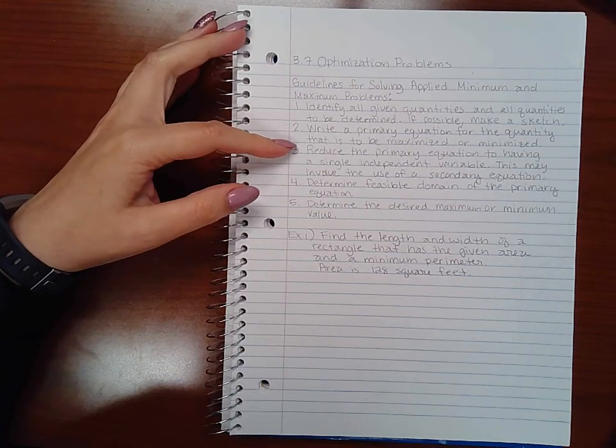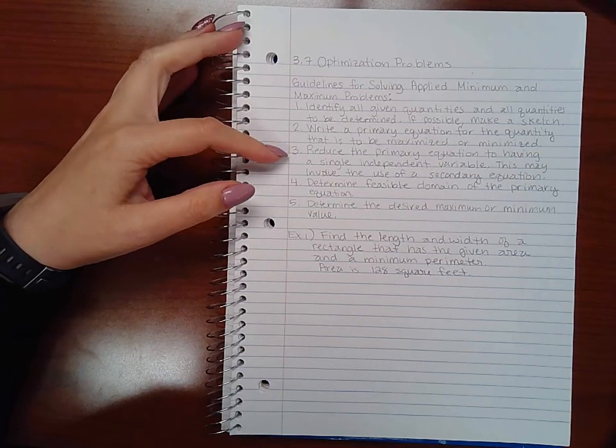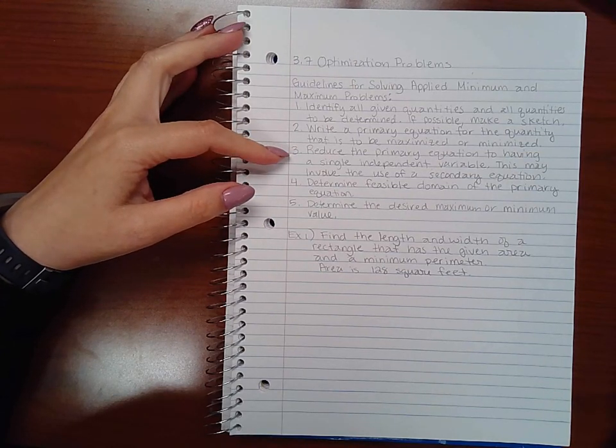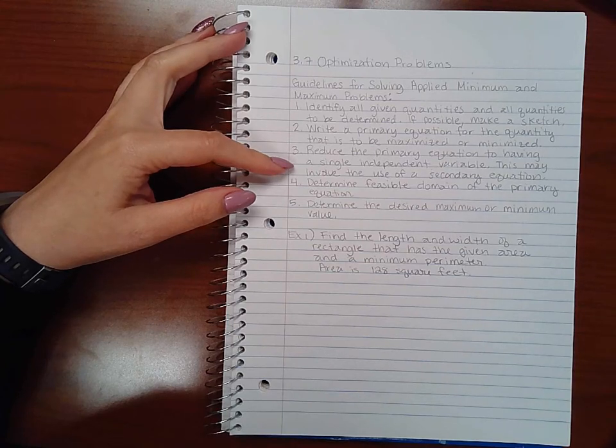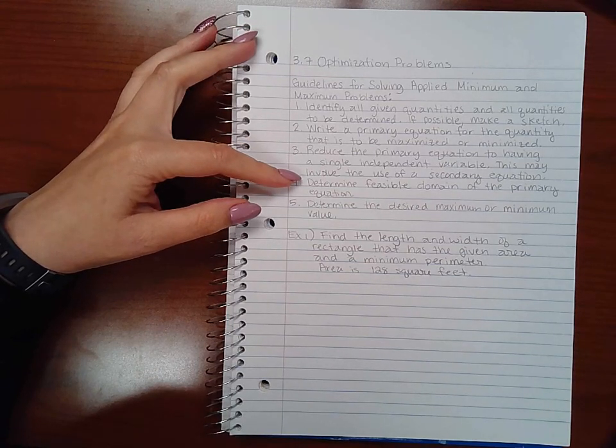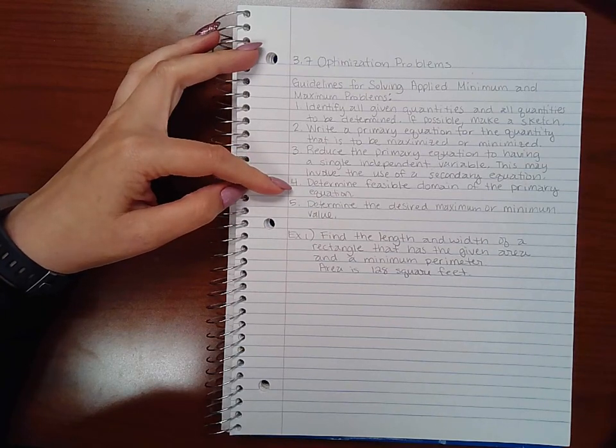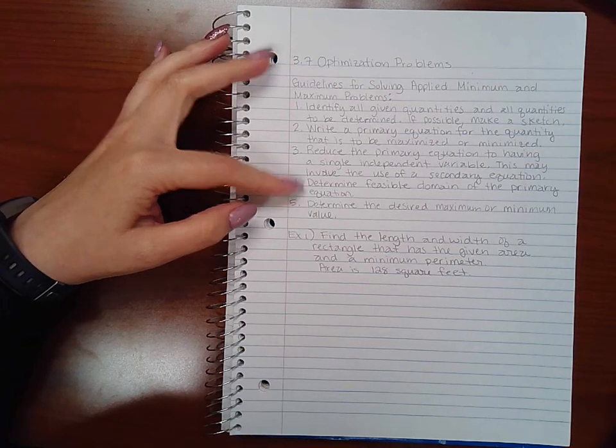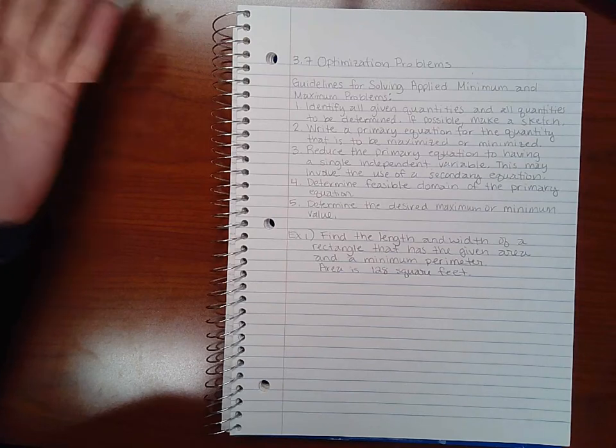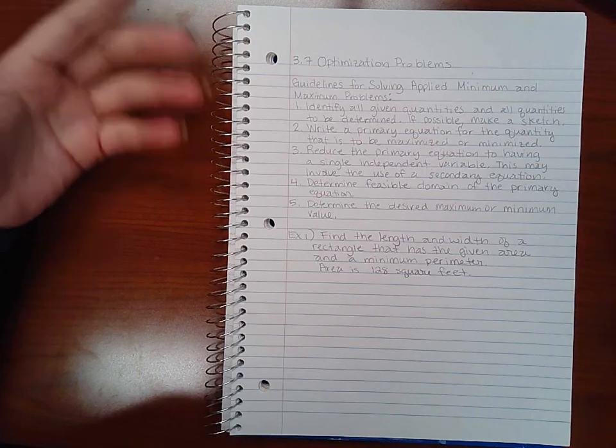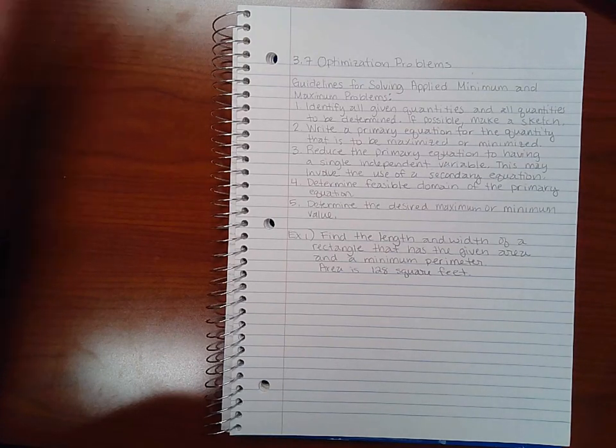Three, reduce the primary equation to having a single independent variable. This may involve the use of a secondary equation. Four, determine the feasible domain of the primary equation. For instance, problems that deal with time, there's no such thing as negative time, so all your negative solutions would be omitted as a feasible answer.